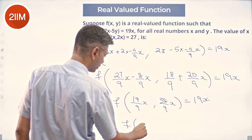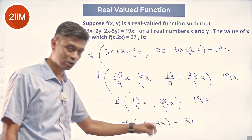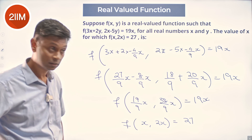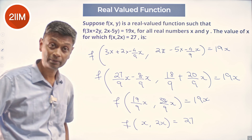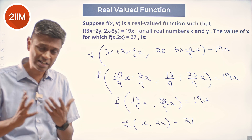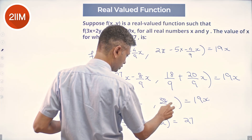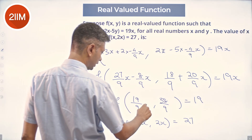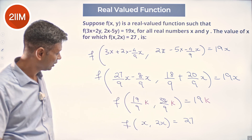We know f(x, 2x) = 27. We know f(19/9·x, 38/9·x) = 19x. The ratio of 19/9·x to 38/9·x is 1 to 2, same as the ratio in f(x, 2x). So we want to find where f(x, 2x) = 27, treating 19/9·k and 38/9·k as x and 2x respectively.